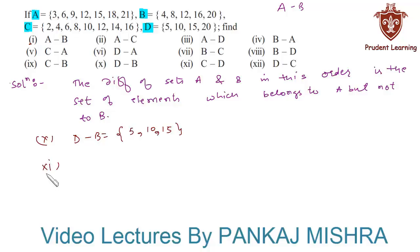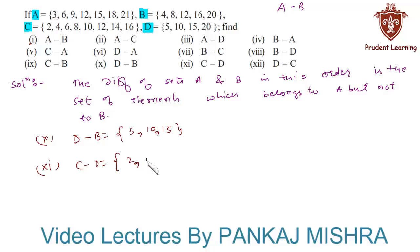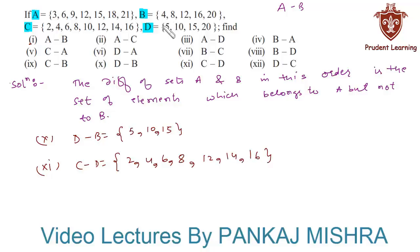Next we have C minus D. This is equal to the set of all elements that are in set C but not in set D. Here we can see that 2, 4, 6, 8, 12, 14 and 16 are present in set C and not in set D.